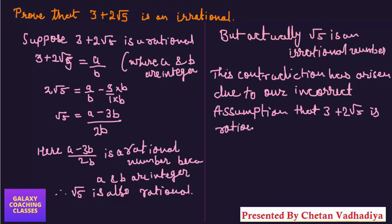Therefore we can say that 3 plus 2 root 5 is an irrational number.